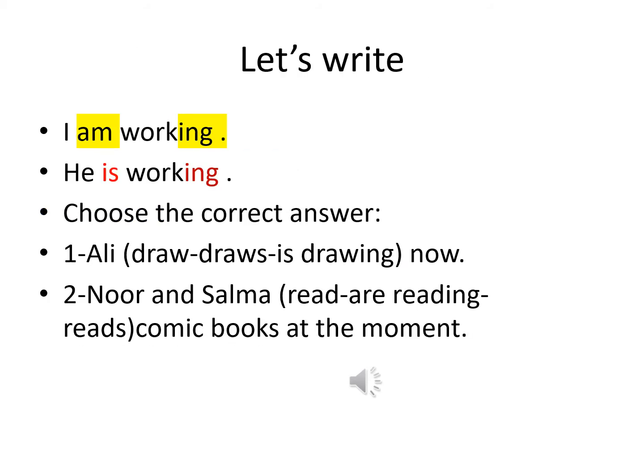Now let's write some sentences using the present progressive. I am working — as you notice, we use verb to be 'am' plus the verb 'work' plus ING. He is working — also here, we use verb to be 'is' and the verb 'work', and we add ING to the verb.